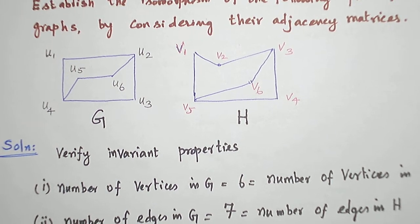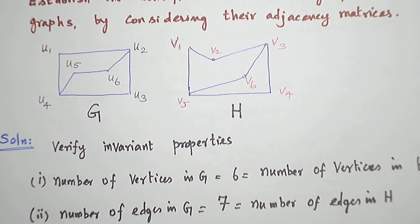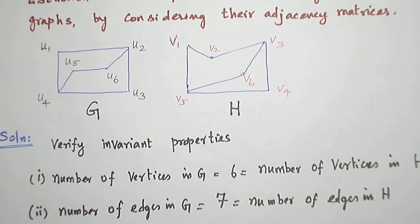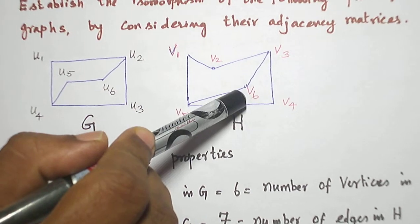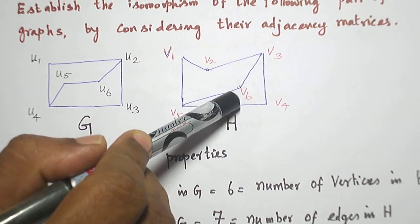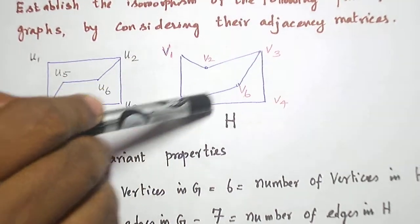in H also, which are the vertices that are adjacent with degree-3 vertices on both sides? If you look at that, V6 is adjacent with degree-3 vertices on both sides.